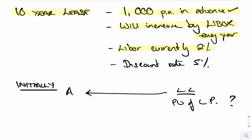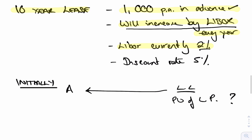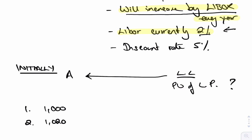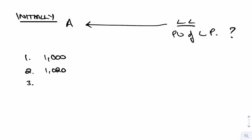If you remember with the index one, it was simply 1,000 every year, because the index might not change. This one says it will increase by LIBOR every year, and LIBOR is 2%. So this time I know that in year one I'll pay 1,000, in year two I'll pay 1,020 — because at the moment it's 2%. I don't try to guess what LIBOR will be in the future; I just keep going up by 2% every year.